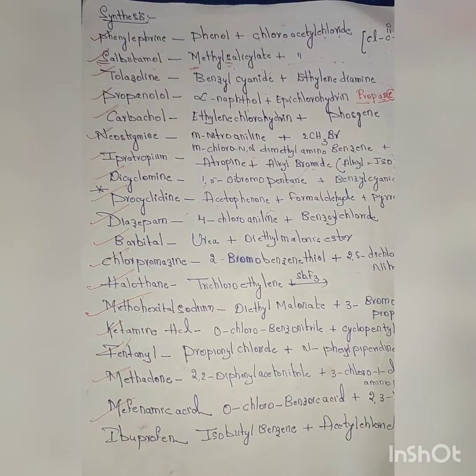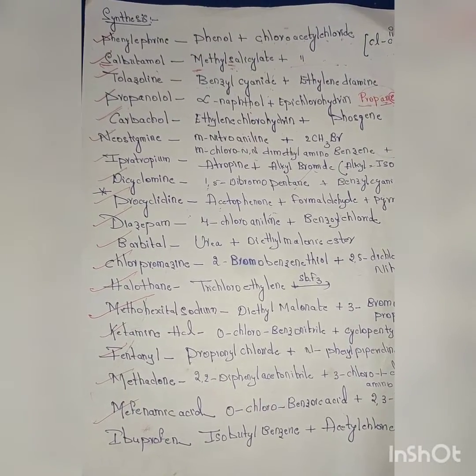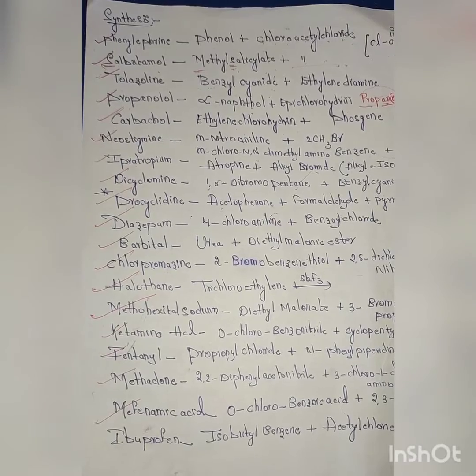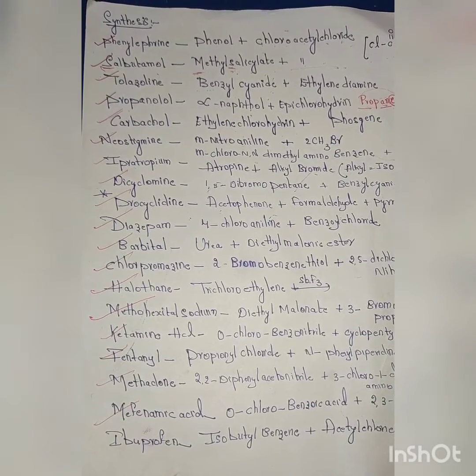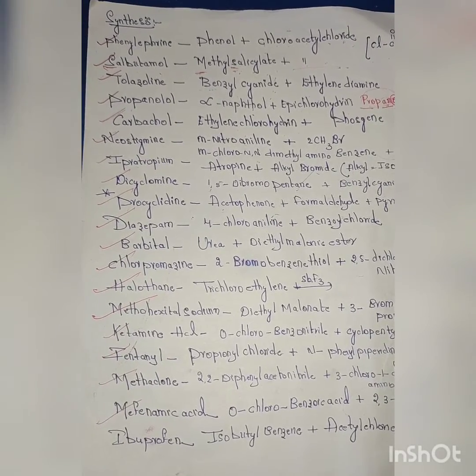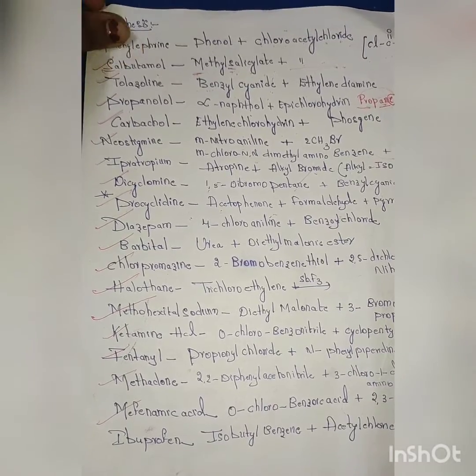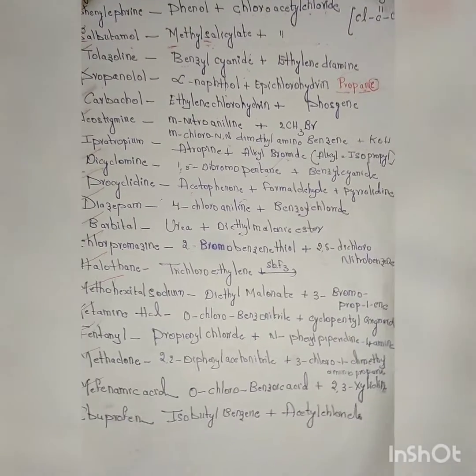Now let us look at the next synthesis, that is tolazoline. The synthesis of tolazoline includes the reaction between benzyl cyanide and ethylene diamine. Now let us look into the synthesis in detail.